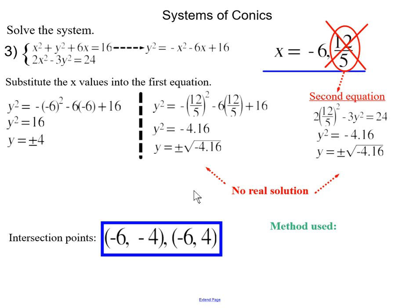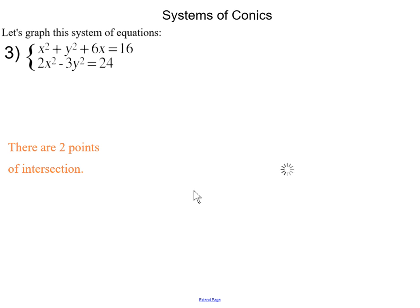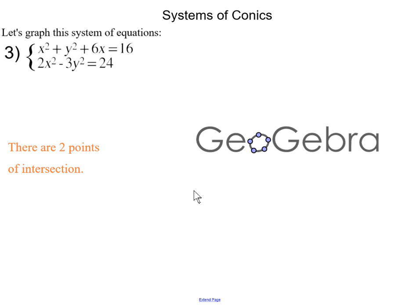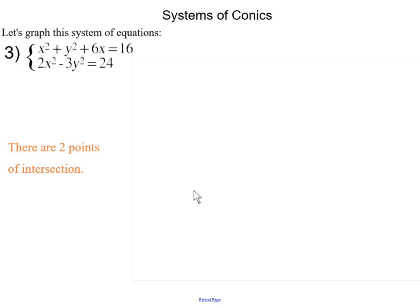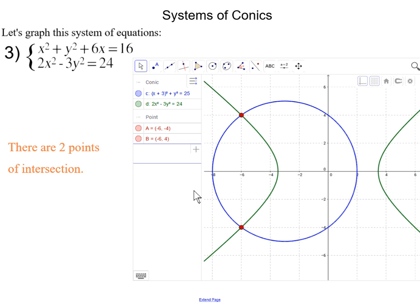The method used here was substitution — we substituted one equation into the other. Looking at the graph one more time, we have the two points of intersection: (negative 6, negative 4) and (negative 6, 4). There are two points of intersection.